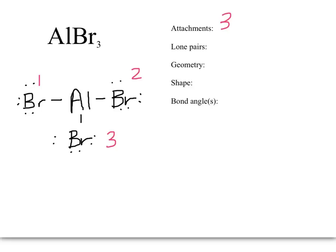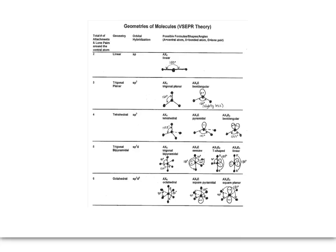There are no lone pairs on the central atom. If I add that together, three plus zero equals three. When I look at my sheet of geometries and shapes, I'm going to look at the number three. That means that my geometry is trigonal planar. For my shape, I have two choices. One that has all attachments around the central atom, and then one that has one lone pair. Well, that's not my molecule. So I'm going to go with trigonal planar for my shape as well.